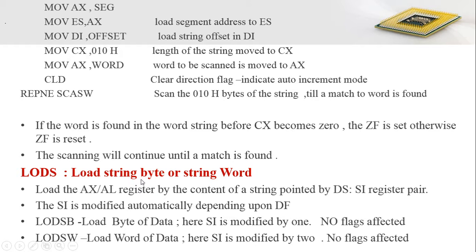Next is the LODS instruction — load string byte or string word. This loads the content of the location pointed by DS:SI into the AX or AL register. SI is modified automatically depending upon the direction flag value: if DF equals 0 it performs auto-increment; if DF equals 1 it performs auto-decrement. LODSB loads byte by byte from the location pointed by DS:SI into AL, and LODSW loads word by word into AX. No flags are affected by executing these instructions.